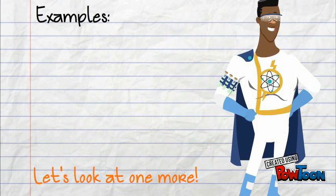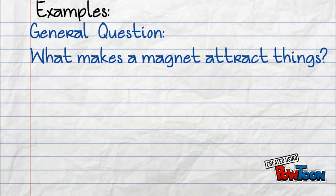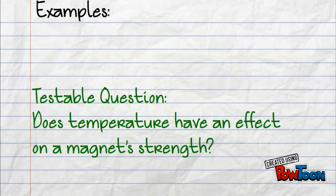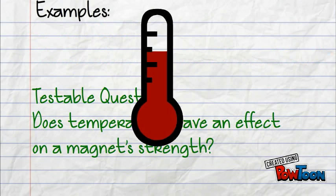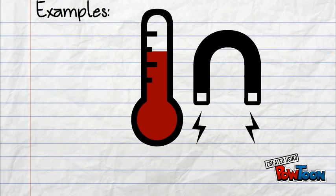Now let's look at one more. Our general question would be: what makes a magnet attract things? But we will write it as a testable question: does temperature have an effect on a magnet's strength? Our change in this statement is the temperature, and we're measuring the actual strength of the magnet.